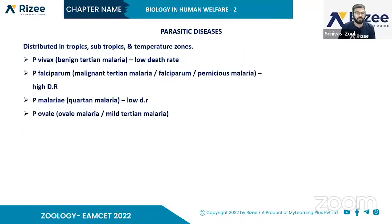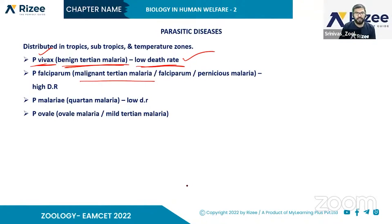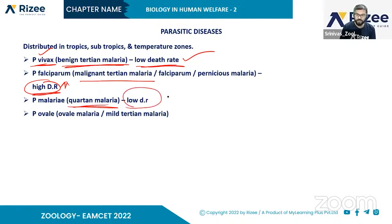Plasmodium species are distributed in the tropics, subtropics, and temperate zones. Benign tertian malaria is caused by Plasmodium vivax, which has a low death rate. Plasmodium falciparum causes malignant tertian malaria. Plasmodium malariae causes quartan malaria, also with a low death rate.